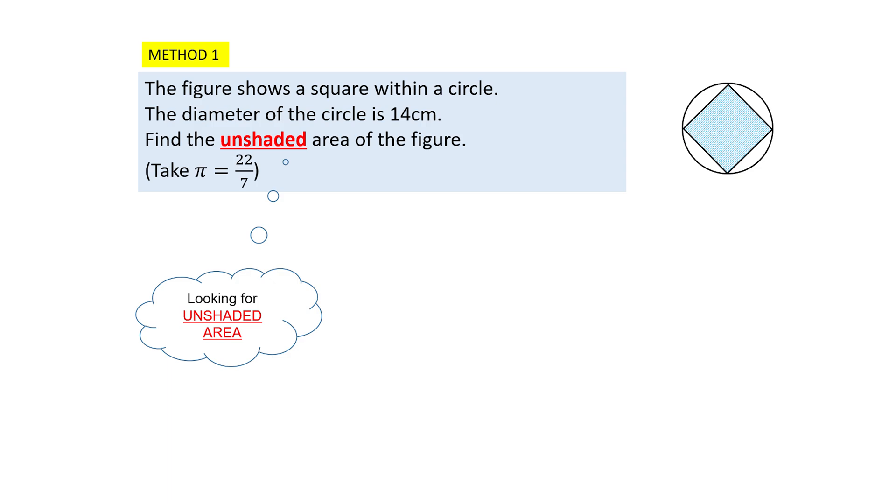To find the unshaded area, most pupils will be able to answer circle minus square. We have learnt the formula that the circle is pi r square and the square is length times breadth. Unfortunately, this question is not as simple as it seems because the length and breadth of the square is not given. Hence, we will need to use some other ways to find the area of the square.